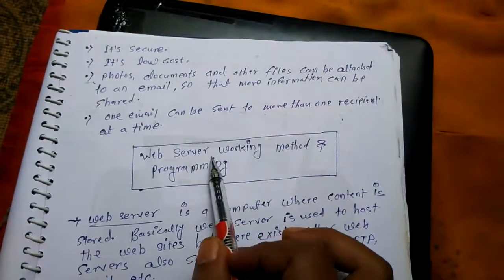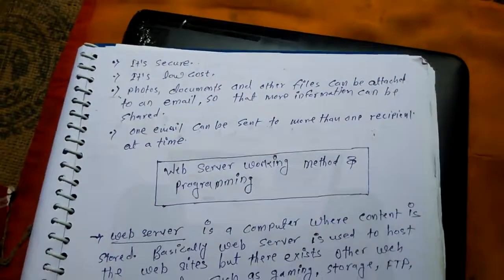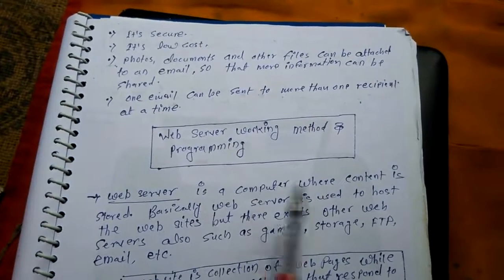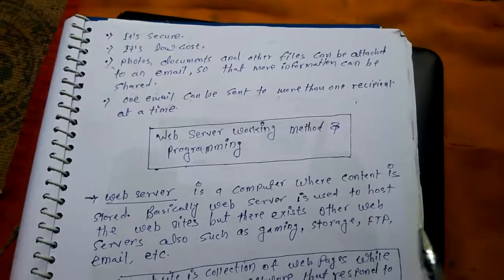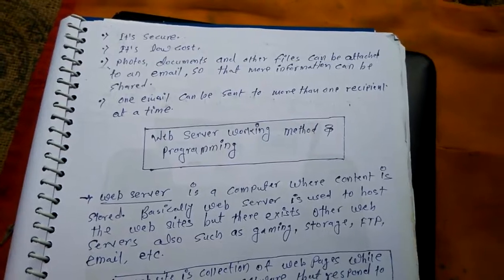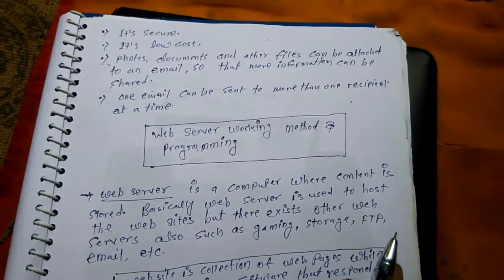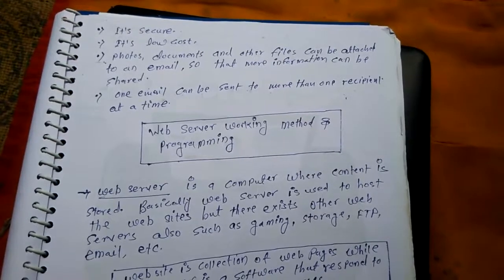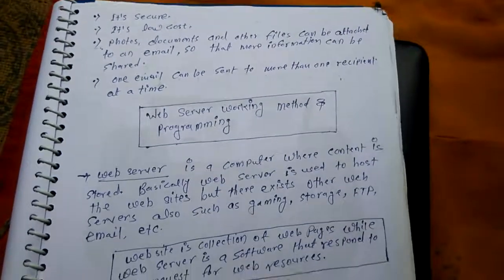So our next topic is web server — working method and programming. Web server क्या होता है — what is web server? First, a web server is a computer — एक तरह का computer होता है। Web server जो है, एक तरह का computer रहता है जिसमें आपके जितने भी information रहते हैं — web के सारे information उस web server पर रहते हैं। तभी तो हम जब कभी भी online होते हैं, हमें time limitation या bonding की कोई जरूरत नहीं होती। हम जैसे search करते हैं, वो web server से data pick up करता है और हमें present करता है।